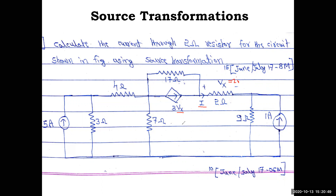In exams there will always be new problems, so you need to identify the first step yourself. Here, we observe: a current source in parallel with resistance can be converted to a voltage source in series with resistance. The dependent current source in parallel with 17 ohm becomes a dependent voltage source in series. The 1 amp source with 9 ohm also converts. So in the first step, convert all three current sources into voltage sources in series with resistance.